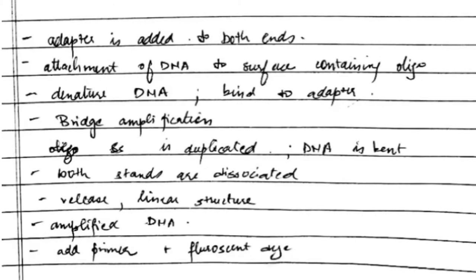The DNA is attached to the surface, the DNA gets denatured and binds to the adapter, then bridge amplification occurs, and both strands are disassociated releasing a linear structure. The DNA gets amplified.